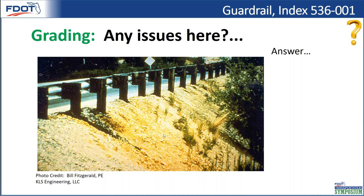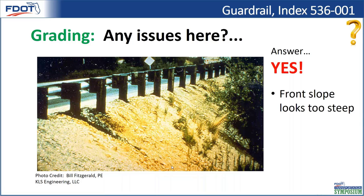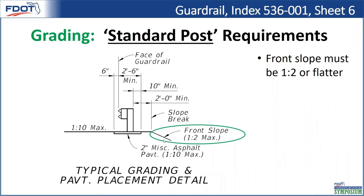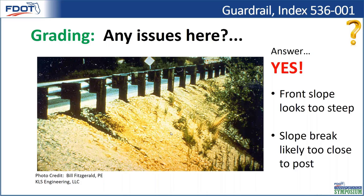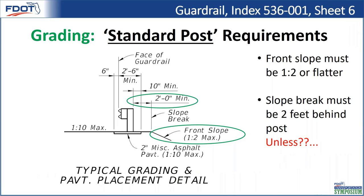Here I'm showing some guardrail — luckily this photo looks pretty old and is from a different state, but it's good to understand these issues so we can avoid them in Florida. It looks like we have a slope break a little in front of the post, and the front slope may be quite steep. The answer is yes, there are issues: the front slope is too steep, and the slope break is likely too close to the post. From our standard, the front slope needs to be 1 to 2 max, and this looks closer to 1 to 1.